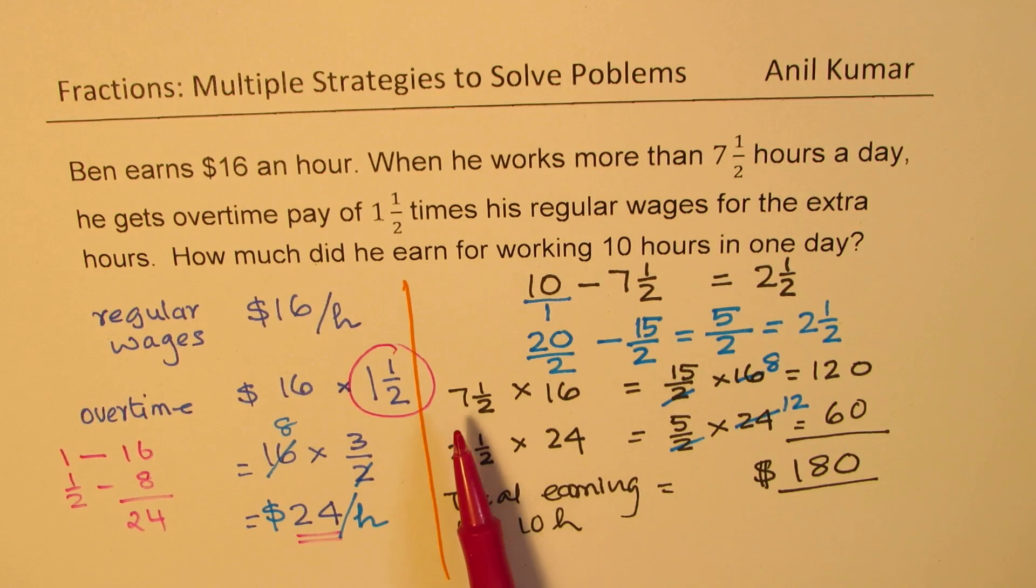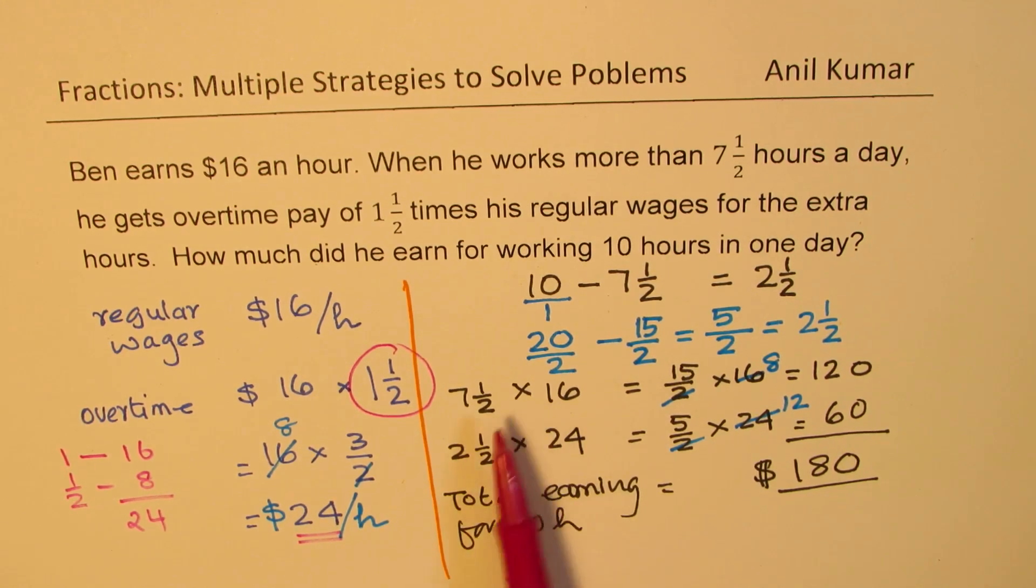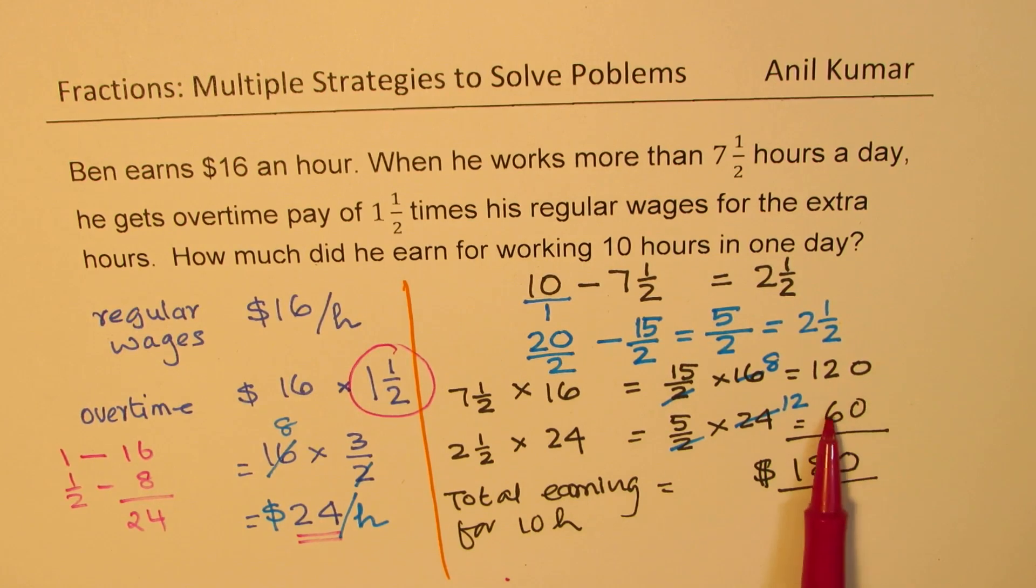Now, regular was 7 and a half. So Ben gets paid $16 an hour for 7 and a half, $24 an hour for 2 and a half. When you multiply them, you get 120 and 60. Adding 180 is the total amount which Ben earns for 10 hours in one day. So I hope all the steps are absolutely clear.